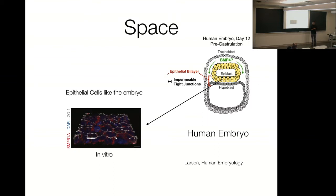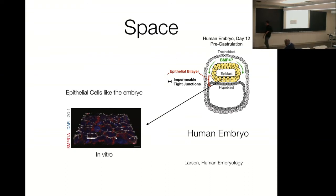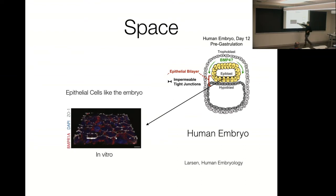You can take human embryonic stem cells and grow them in a dish. The conditions are exceptionally controlled — not some broth, but just two inhibitors of two signaling pathways to keep the cells maintained. The white you see are the watertight junctions, exactly as in the embryo. The blue are nuclei.